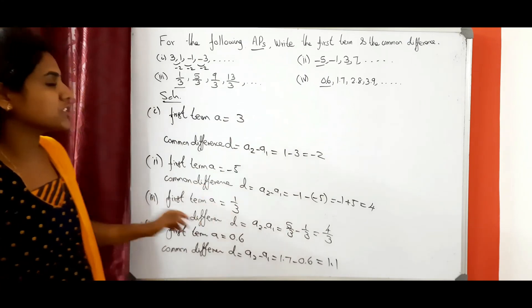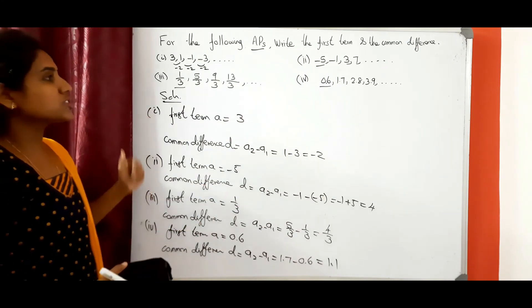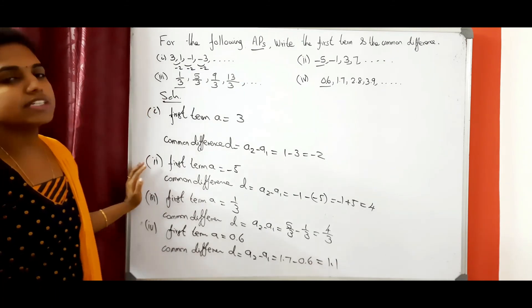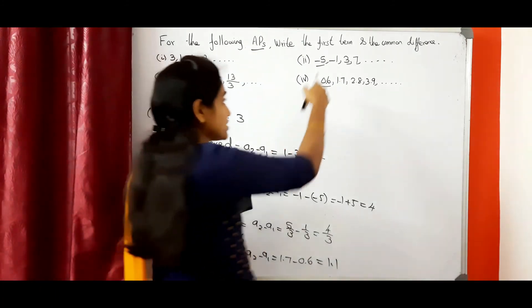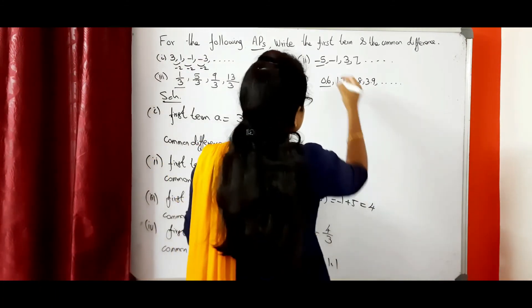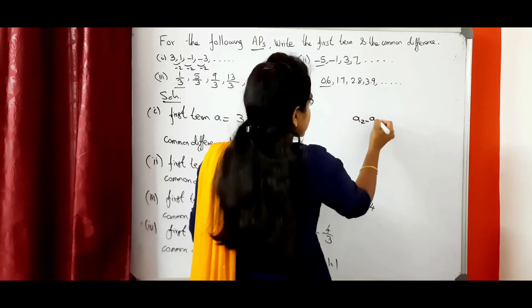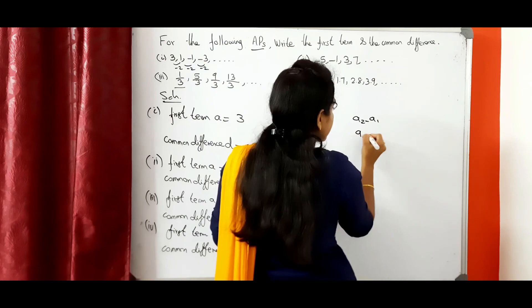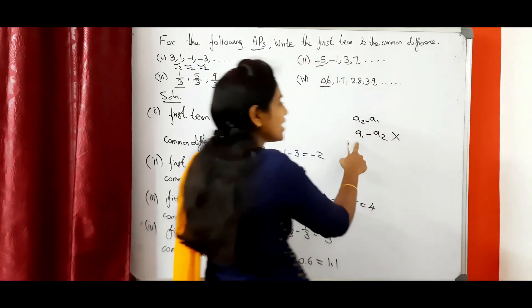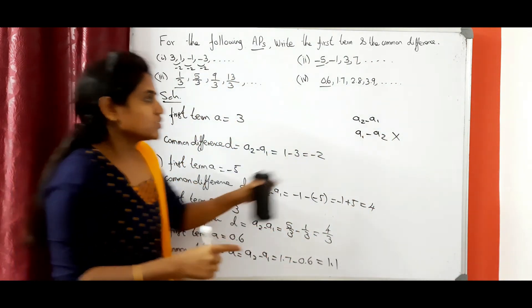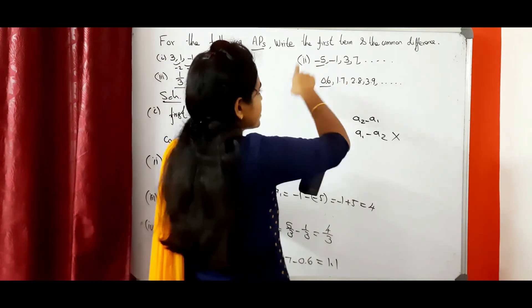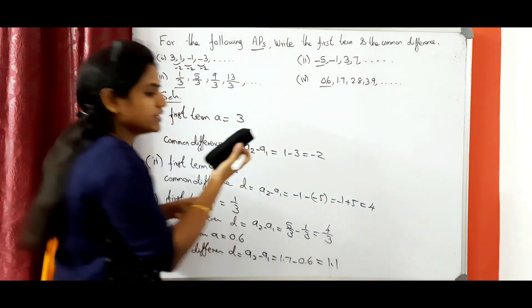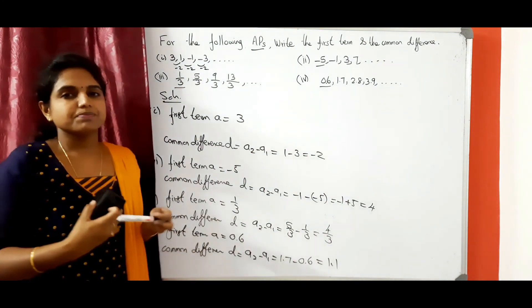This is one more important point. Usually they will ask in exercises to find the first term or the common difference. Where do students usually make a mistake? Everyone tends to do a2 minus a1 correctly, but some students write a1 minus a2 instead — this is wrong. If you do that you won't get the right answer. So be careful: second term minus first term, or third term minus second term — that is the common difference. Thank you students.